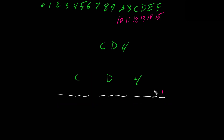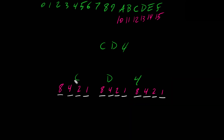Let's place the decimal values 1, 2, 4, 8 under each group of 4 bits — one group for C, one for D, one for 4. Remember, for binary the values go 1, 2, 4, 8, 16, 32, 64 and so on, but for each hex digit we only use 1, 2, 4, 8. C in hexadecimal is equivalent to 12.